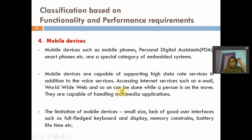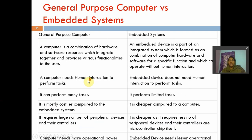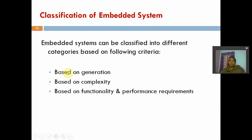These are the different categories of classifications of embedded systems. Embedded systems are classified based on generations — four types: first, second, third, and fourth generation. Second, based on complexity — three categories: small scale, medium scale, and large scale. Third, based on functionality and performance — four types: standalone, real-time, networked information appliances, and mobile devices. I hope you understood this topic. Thank you for watching. I will explain the next topic in the next video.